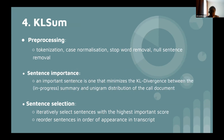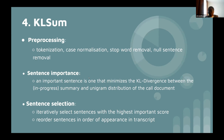For KL Sum, sentence importance is computed iteratively. You maintain an ongoing summary, and at each step you select the sentence that minimizes the KL divergence between the summary being created and the original document. You do this iteratively until you have the desired number of sentences.